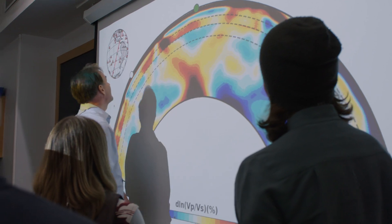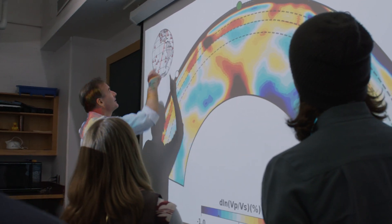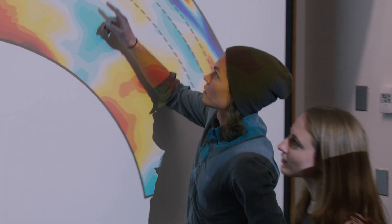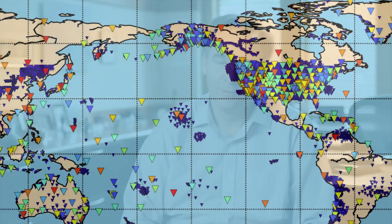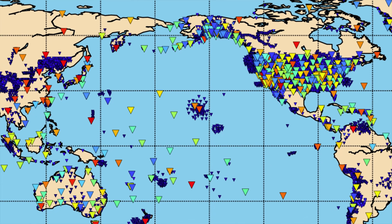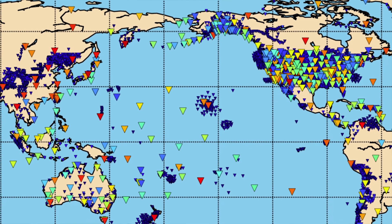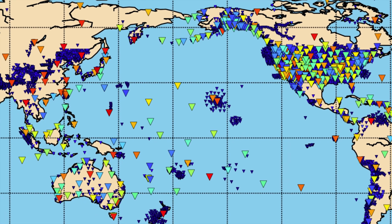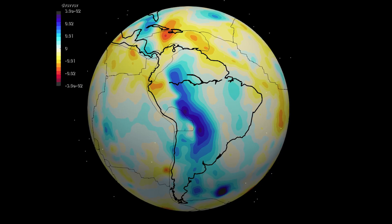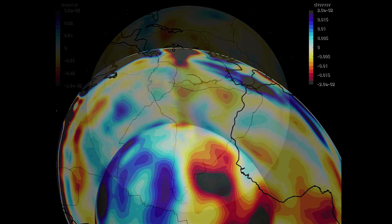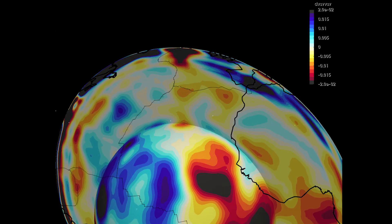The goal of our research is to try and image the Earth's interior on a global scale. We're basically 3D cartographers of the Earth's mantle, using data from earthquakes recorded all over the world. All that information is used to try and constrain three-dimensional pictures of the Earth's interior.